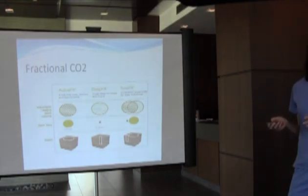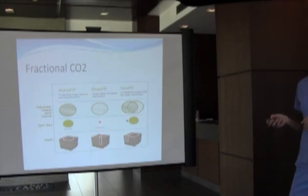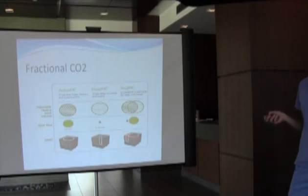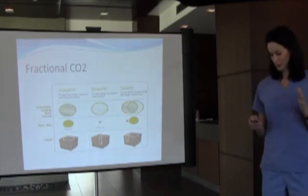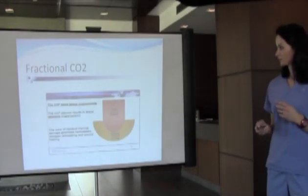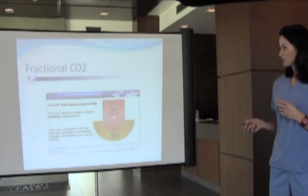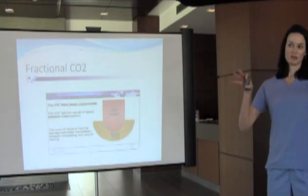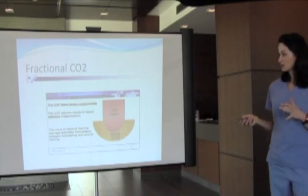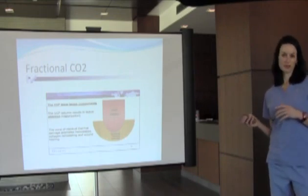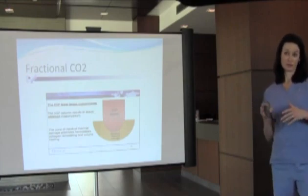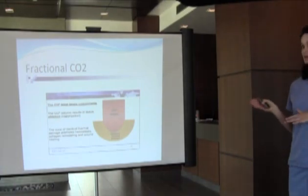With our fractional CO2, we do two passes typically. First, we do the Deep FX — a smaller diameter that penetrates deeper for deeper lines, wrinkles, and scarring. Then we go over again with the Active FX, a larger diameter that doesn't penetrate as deep, but combined — what we call Total FX — you get deep penetration plus superficial treatment of pigment. The CO2 laser beam ablates the targeted area, and around that you get a saucerization effect of heat, which accounts for 30% contraction of tissue. No other laser can produce this amount of heat, which is why this is such a great, aggressive laser.